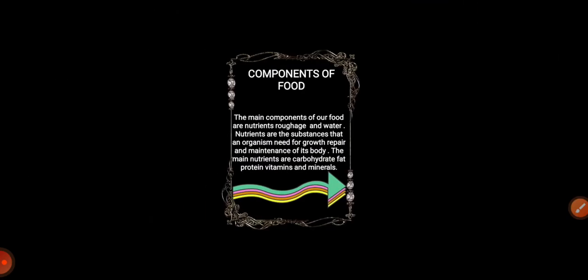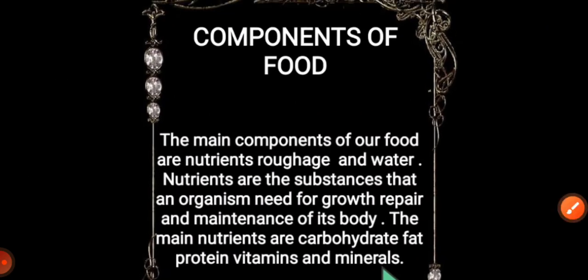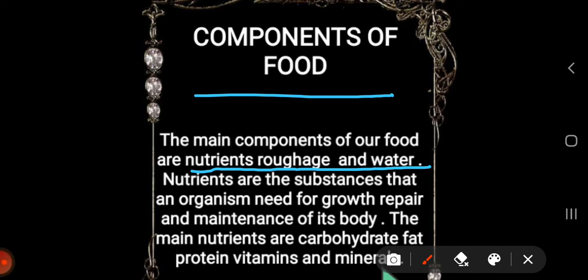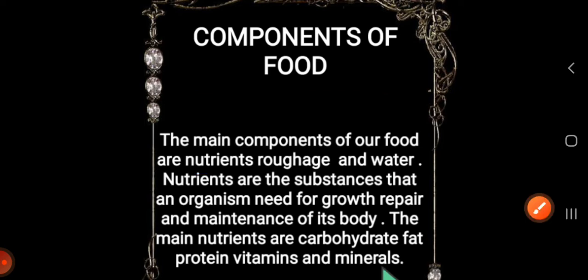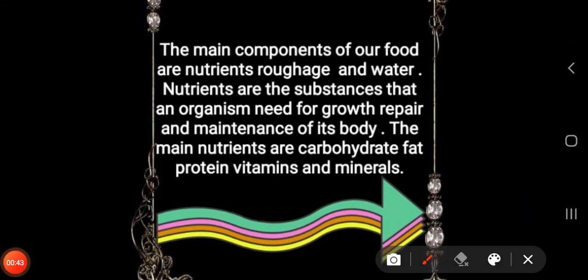Next we will study components of food. The main components of our food are nutrients, roughage, and water. Nutrients are the substances a diet and organism needs for growth, repair, and maintenance of its body. The main nutrients are carbohydrates, fat, proteins, vitamins, and minerals.